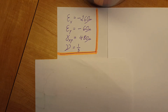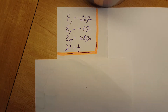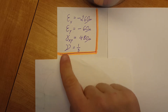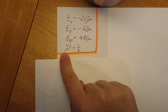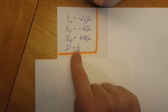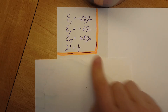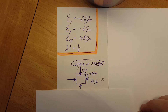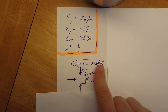This is a strength of materials problem, and we have a certain state of strain given. They tell us that this is measured on the surface of a thin plate, and we also know that on the surface of this plate we do not have any stress. They tell us nu, which will be useful for Poisson's ratio, which is one third. From this information we can go ahead and draw up our state of strain.